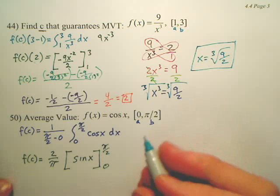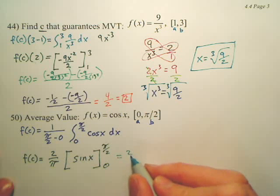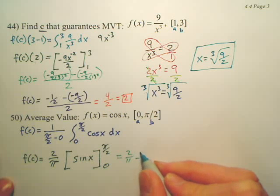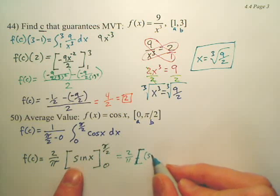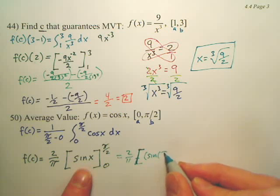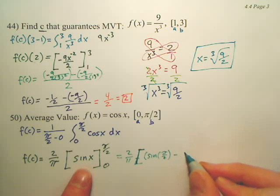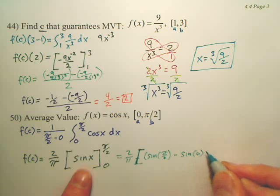We integrate it so dx drops out. Okay, so what we now have is 2 pi, sorry, 2 pi times, well, the first one is sine pi over 2 minus sine 0.